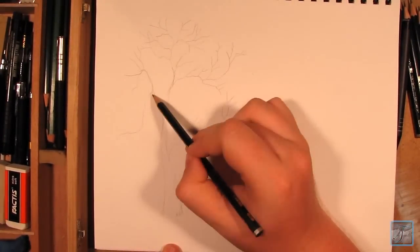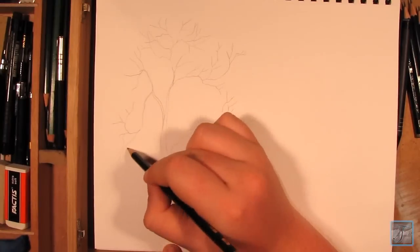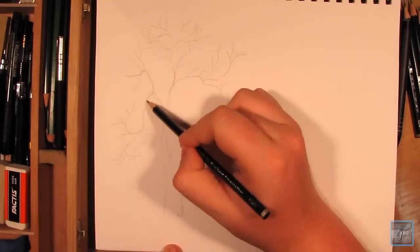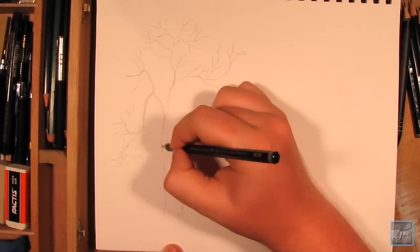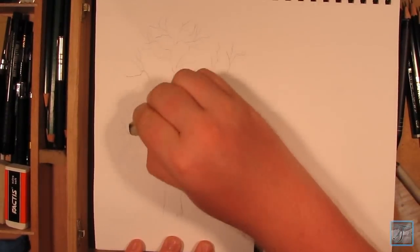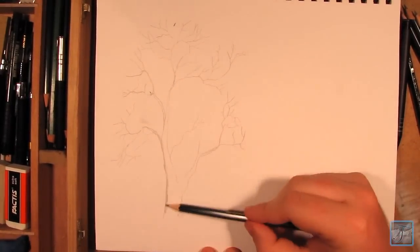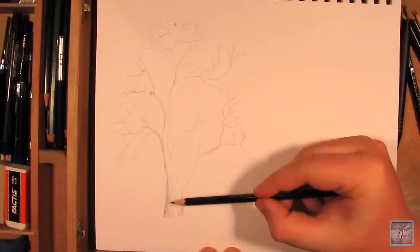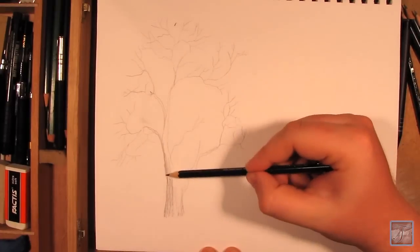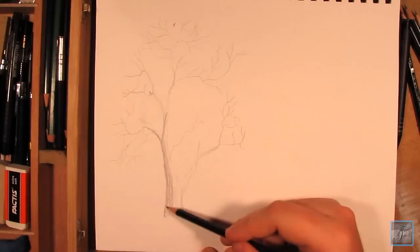From there you just start creating your tree—make the tree trunk and then kind of work it up. One thing you want to keep in mind is keeping the tree looking organic, so you want to really wiggle your pencil as you're making those branches. Then you can make more branches from those and keep going.